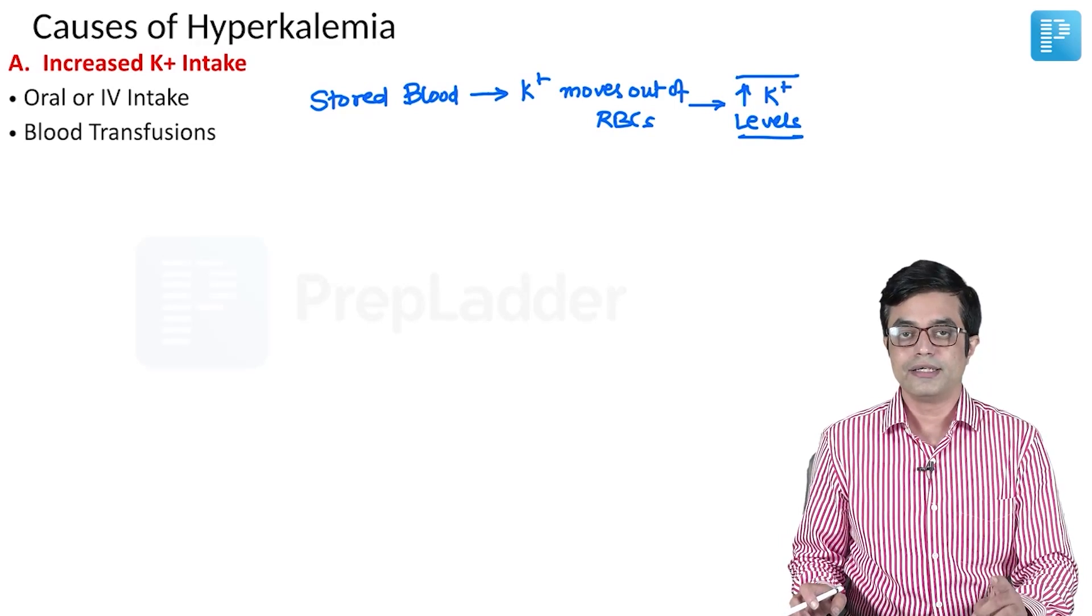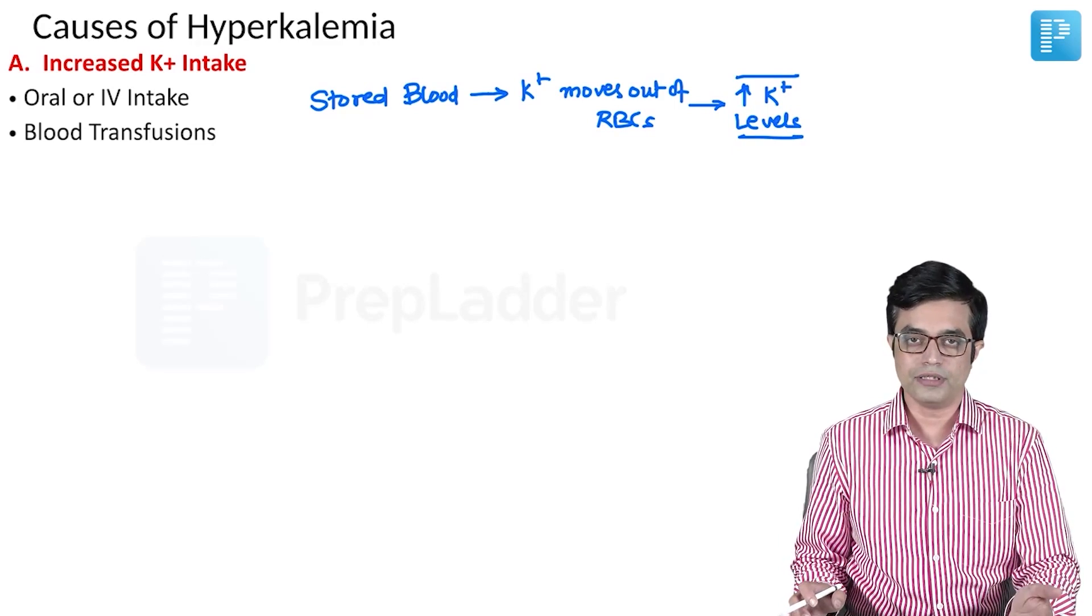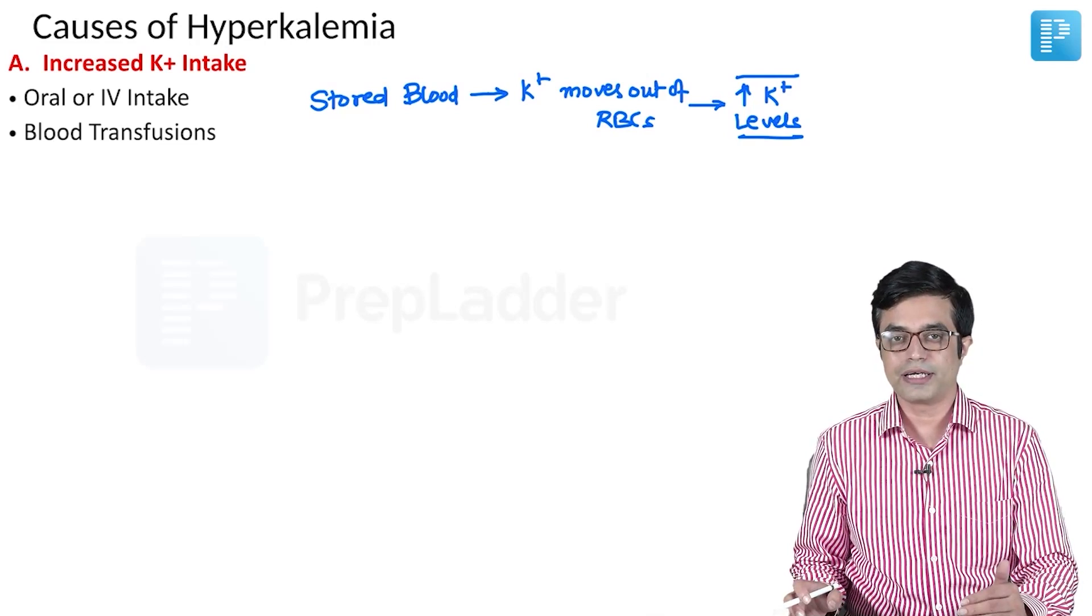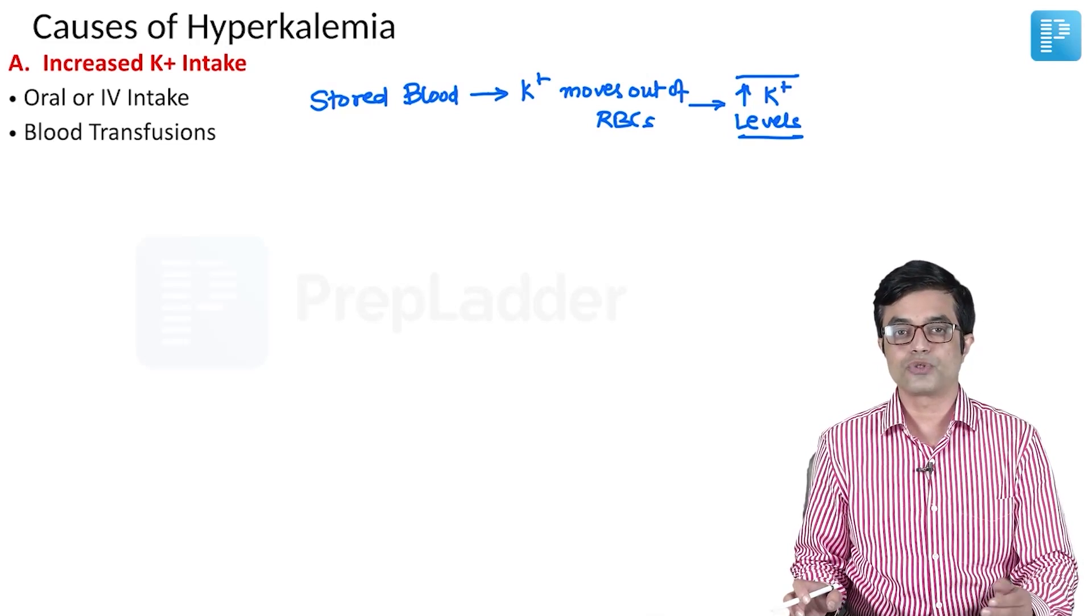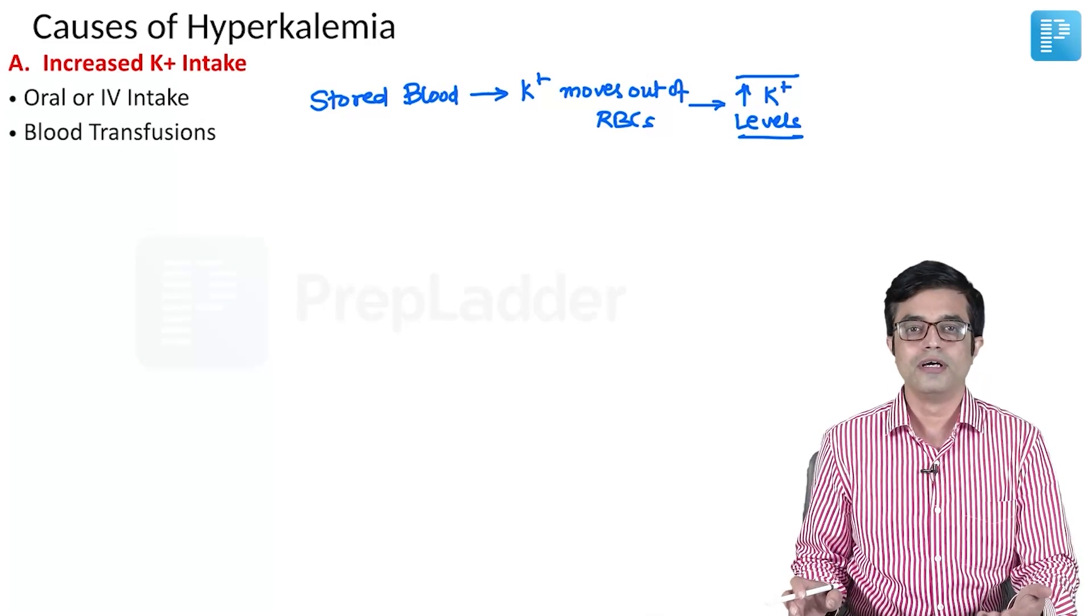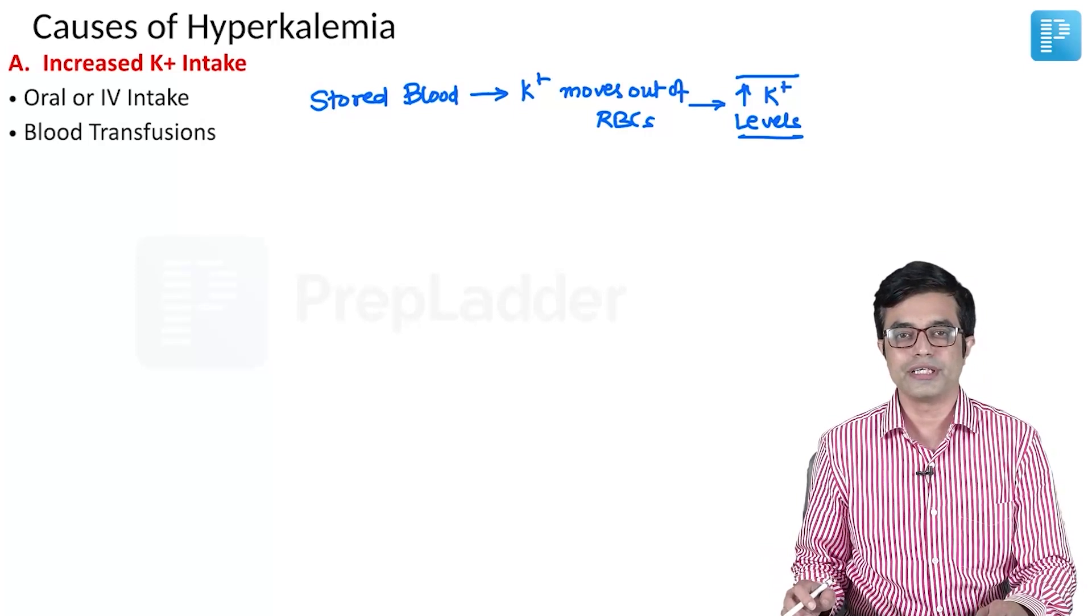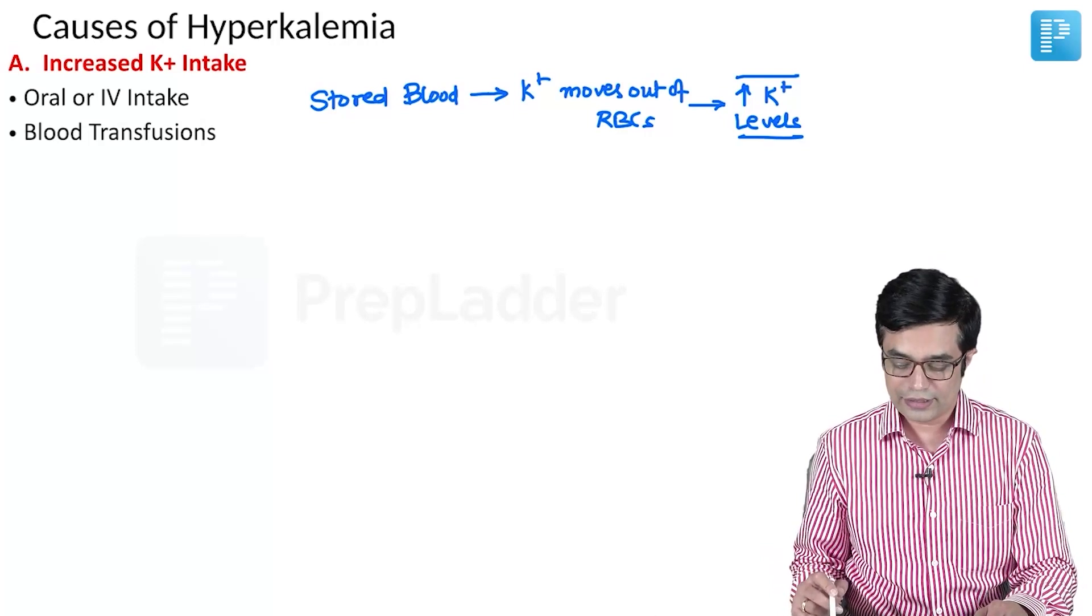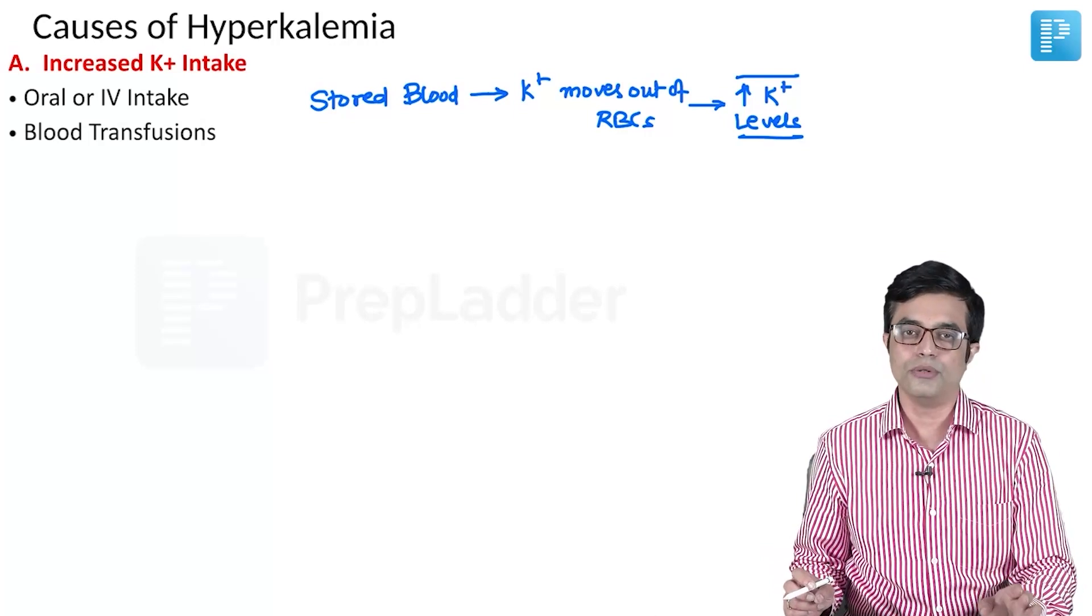You need to understand that in case of fresh blood, the chances of hyperkalemia are relatively less. In case of stored blood or blood products, particularly where RBCs have been stored for more than 36 to 48 hours, you will find that serum potassium levels are significantly more.